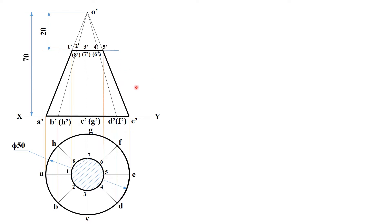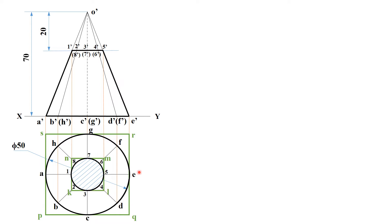Now that sectioning is complete, transfer this onto the isometric view. To do that, first enclose the base with box PQRX, and similarly enclose the sectional view with box KLMN. Since this is a frustum, we will be working with two boxes. Transfer these boxes onto the isometric view by first drawing a reference line.